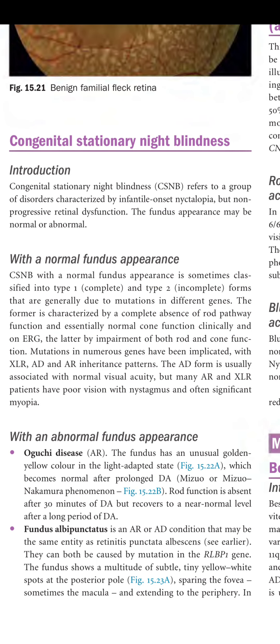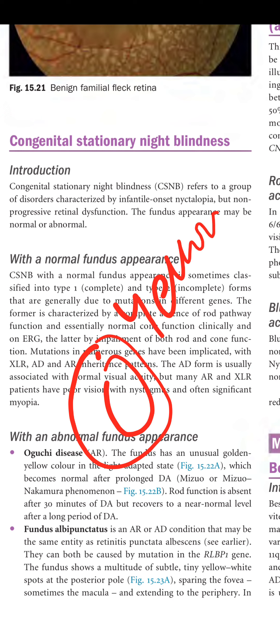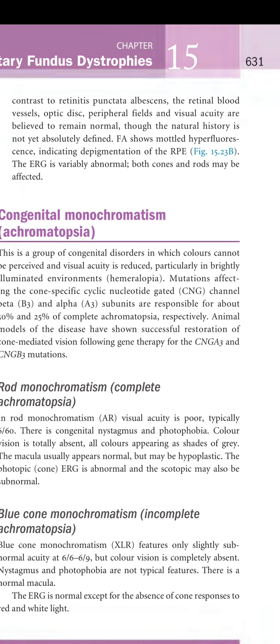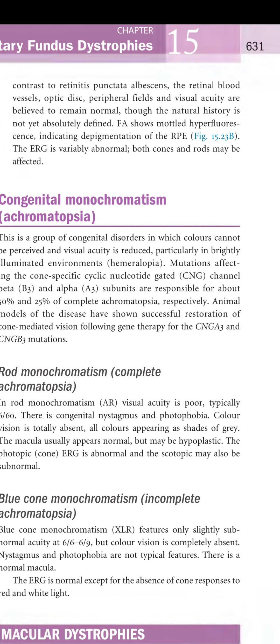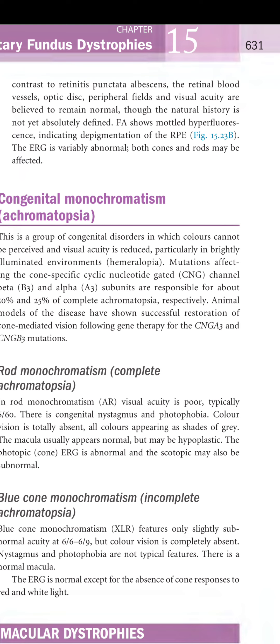Fundus albipunctatus is autosomal recessive or dominant and may be the same entity as retinitis punctata albicans; both can be caused by mutation in the RLBP1 gene. The fundus shows a multitude of subtle tiny yellow-white dots in the posterior pole, sparing the fovea and sometimes the macula, extending to the periphery. Unlike retinitis punctata albicans, retinal vessels, optic disc, peripheral fields, and visual acuity are believed to remain normal. Fundus autofluorescence shows mottled hyperfluorescence indicating RPE depigmentation; the ERG is variably abnormal with both cones and rods potentially affected.